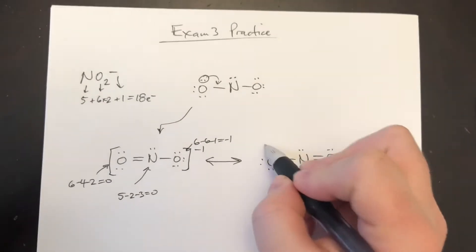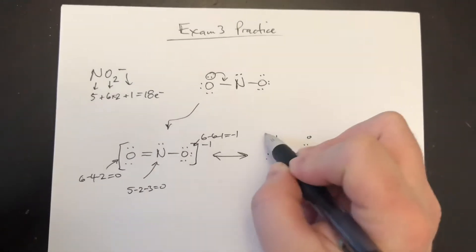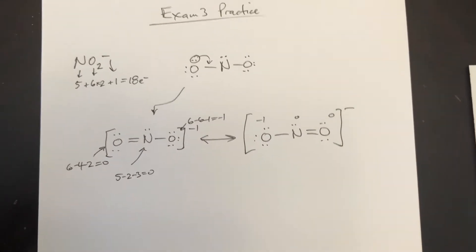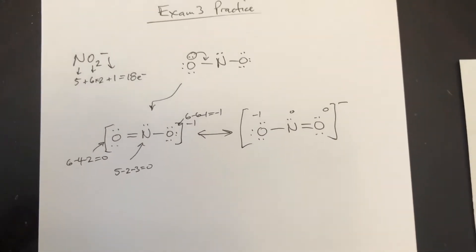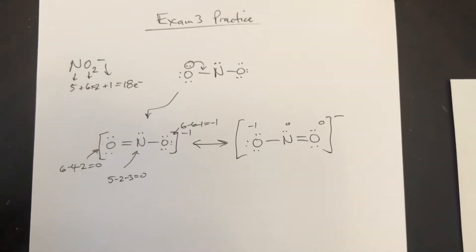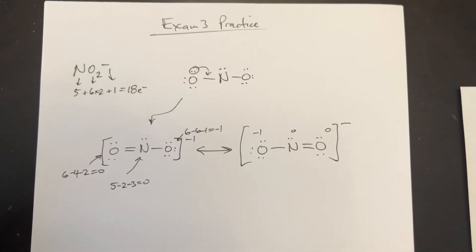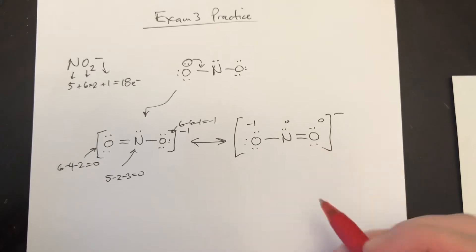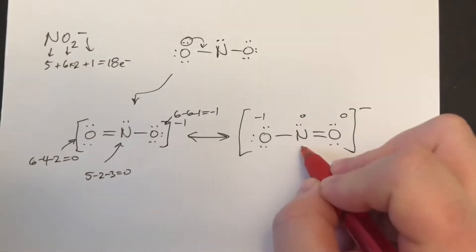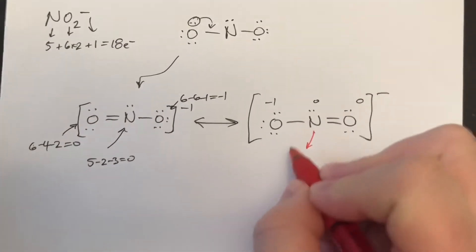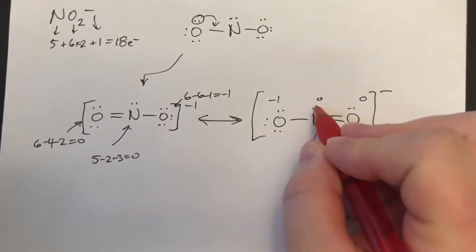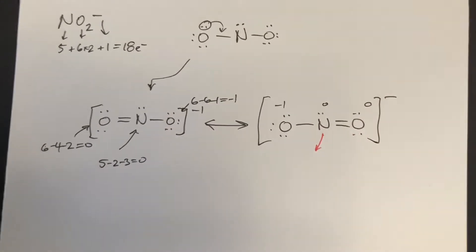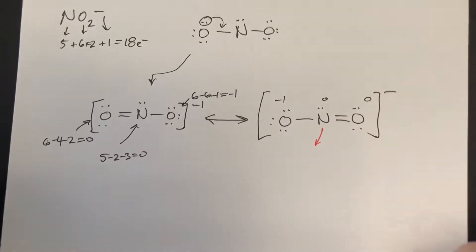The two resonance structures should have the same geometries and the same hybridization, so I'm just going to do one. For molecular geometry, anything with more than one atom attached is a central atom and needs its own geometry. The nitrogen has three groups — single bonds, double bonds, triple bonds, and lone pairs are all counted as one group each — so it has a single bond, a double bond, and a lone pair, giving three electron groups.